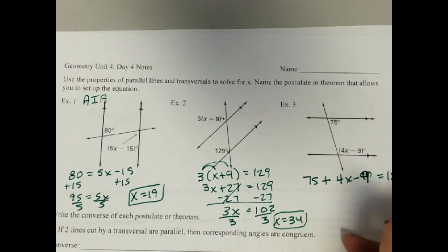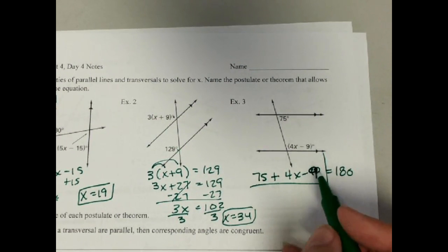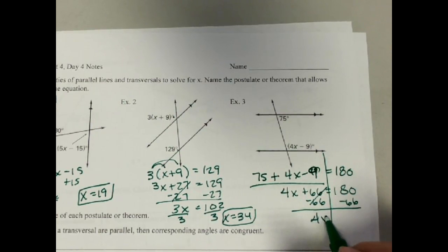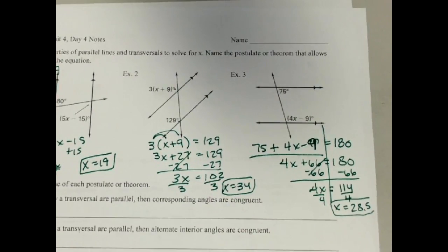If it's on this side of the equal sign, I just put them together. 75 minus 9. 74 minus 9 is 66. So I have 4x plus 66 equals 180. Now subtract the 66. And I get 4x equals 114. Divide by 4, and I get x equals 28.5. So that is really not new stuff. It's just putting the angles we had before together with some algebra.